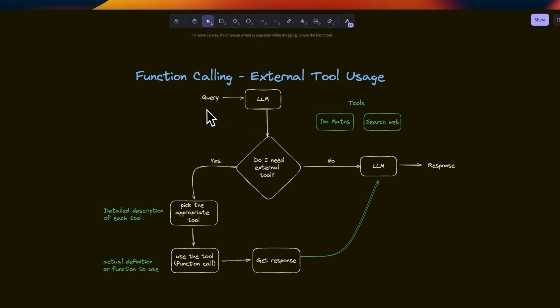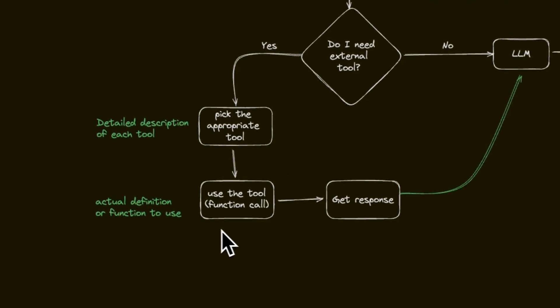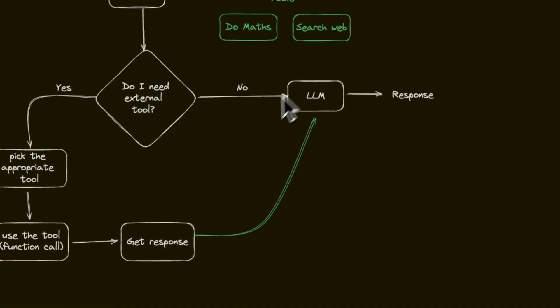Here's how the flow looks like. The user query comes in, the LLM looks at all the available tools or functions, and it determines whether it wants to use an external function or not. If it decides not to, the LLM generates a response based on its training data. If it decides to use an external function, it picks the appropriate function from all available ones. Keep in mind the LLM itself is not able to execute your functions — those are executed by you or a code interpreter. The LLM only provides the inputs based on the initial user query plus the expected outputs. You execute that function call, get the response, and then that response along with the original query is fed back into the LLM to generate a final response.